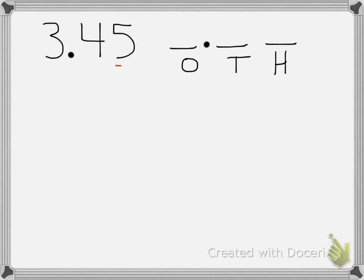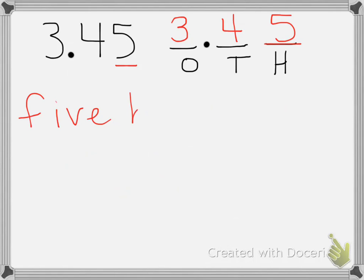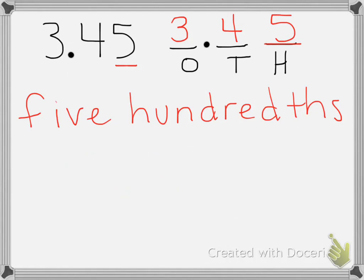On this one, we want to know the value of the 5. We have 3 and 45 hundredths. The 5 is in the hundredths place, so it has a value of 5 hundredths. To write that in standard form, we need to write the number 5 hundredths. So the 5 has to be in the hundredths place — I need a 0 in the tenths, and then the 5 in the hundredths place.